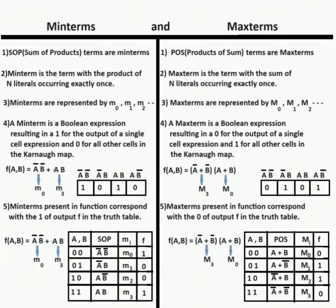In a truth table, the output f for minterms equals 1, and in maxterms, the output of the truth table f for maxterms is 0.